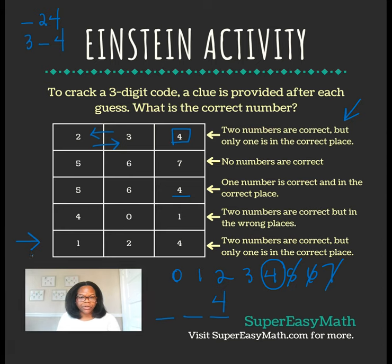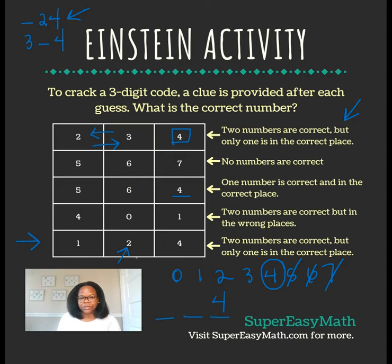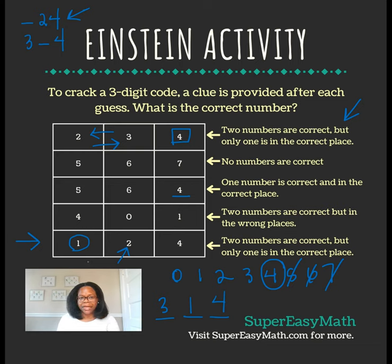Looking at the last clue — two numbers correct but only one in the correct place — and using what the first clue told us, that means 2 cannot be in that center space. So 3 has to be the first digit. That also lets me conclude that 1 is the middle digit, because we know two numbers were correct in that clue, so the 1 has to move into place. The answer to our three-digit code is 3-1-4.